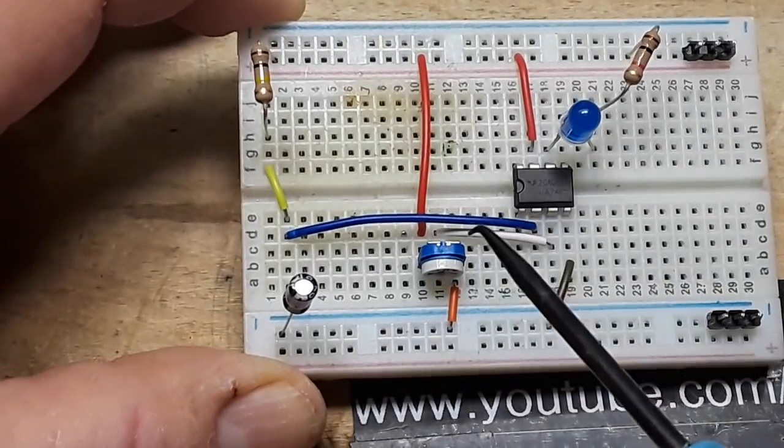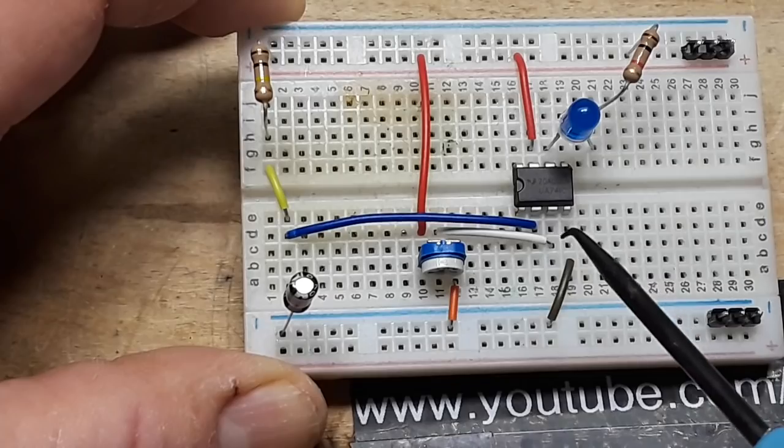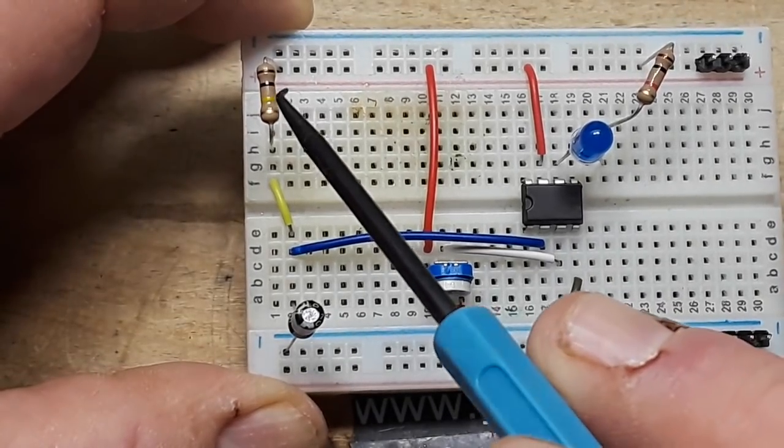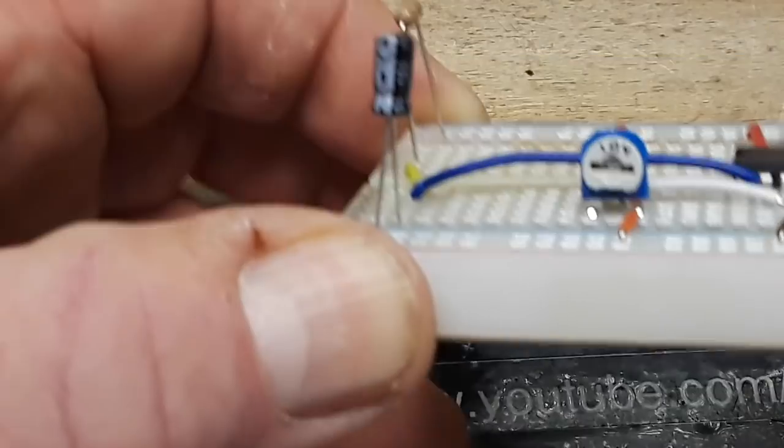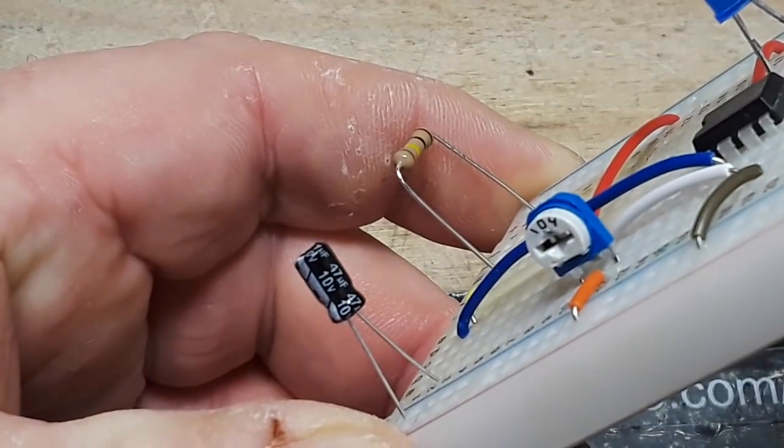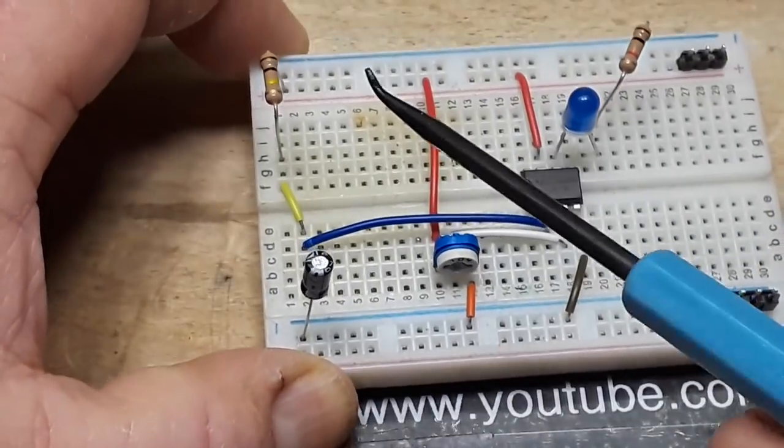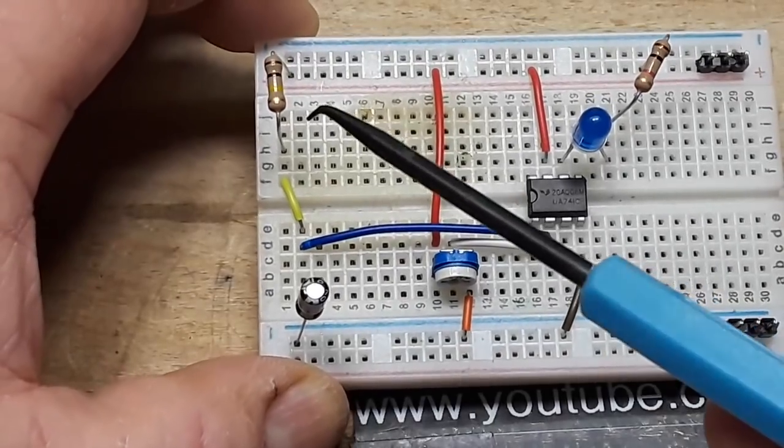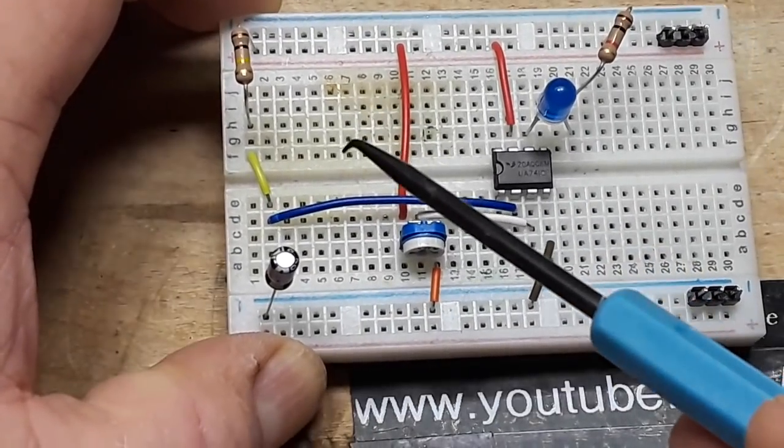And, of course, that's set up as a potentiometer there, a voltage divider. And here we have our 100k resistor. And if you read it, 47 microfarad capacitor.